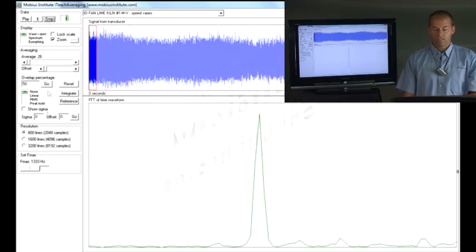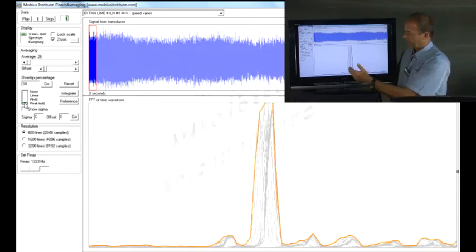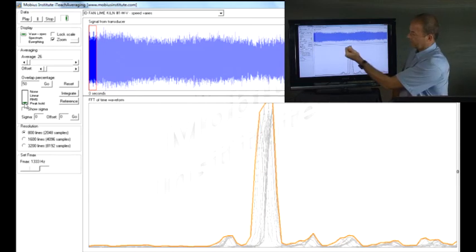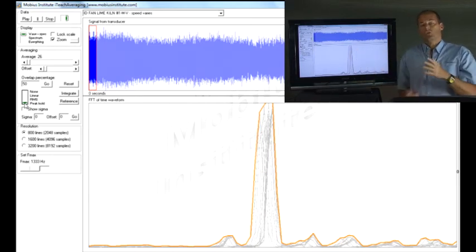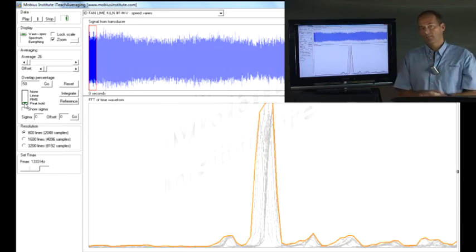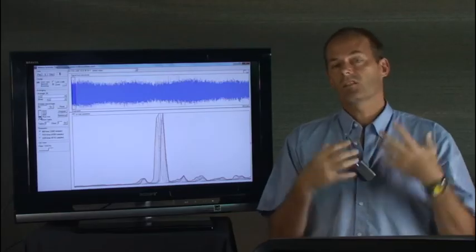You can see the peak is moving in frequency. But when I turn on peak hold averaging, I can see exactly where it's moved. I can see it changing. Now this isn't a fantastic example, but if it was a run-up or run-down test or something like that, you could use this and see exactly how the amplitudes changed as the frequency or as the speed of the machine changed. There's lots of ways to use it.